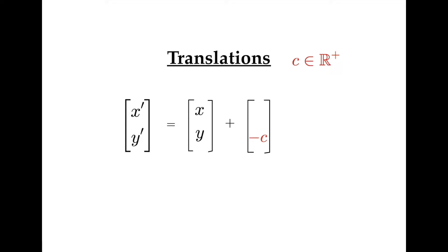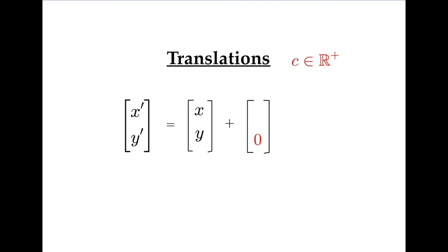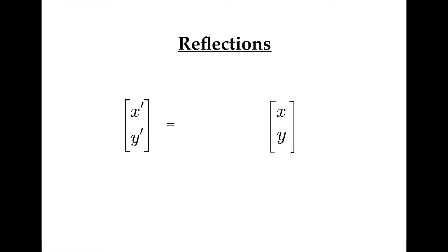Information about any reflections is contained in a two-by-two matrix that is multiplied to the original point matrix. Reflection in the x-axis leaves the x-value unchanged and the y-value multiplied by minus one. So one and minus one are on the main diagonal of the matrix and we have zeros elsewhere.